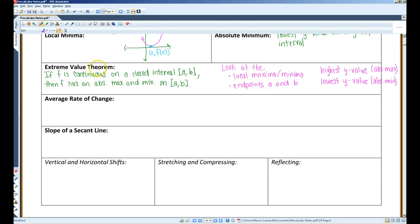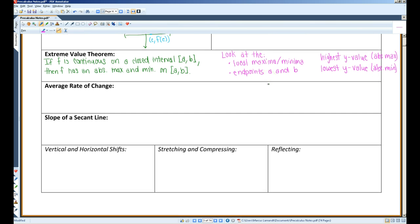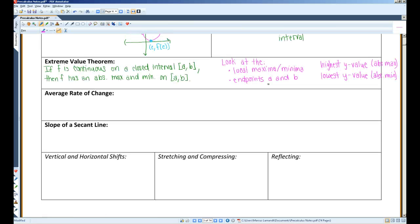The extreme value theorem states that if f is continuous on a closed interval [a, b], then f has an absolute maximum and an absolute minimum on the interval [a, b]. If you are trying to find the absolute maximum or minimum, what you want to do is you want to identify the local maxima and minima, and you want to look at the endpoints, a and b. Of these points, the highest y value is going to be the absolute maximum, and the lowest y value is going to be the absolute minimum.